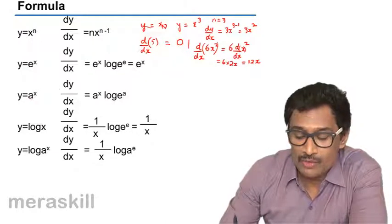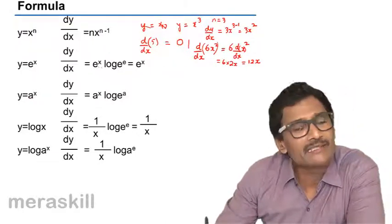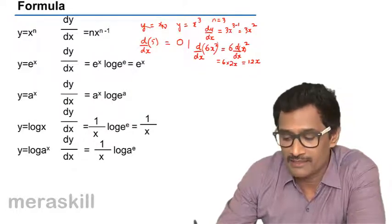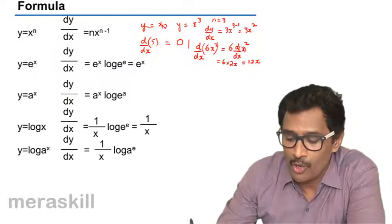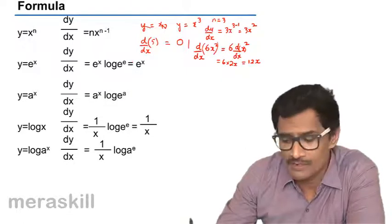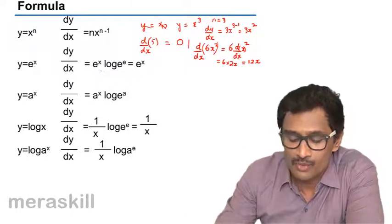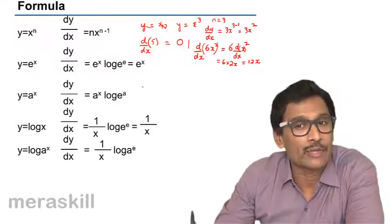Then suppose it is y equals e^x, dy/dx is e^x itself into log e to the base e. This is a kind of a chain rule. And log e to the base e, log of any number to the same base obviously is 1. So ultimately if y equals e^x, it will be e^x itself.